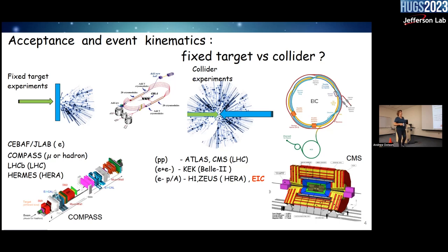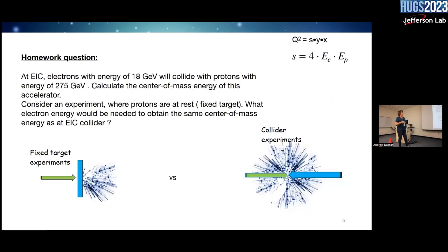For homework: at the EIC we have electrons at 18 GeV and protons at 275 GeV — calculate the center-of-mass energy. Consider that if we wanted this as a fixed-target experiment with protons at rest, what electron energy would we need at Jefferson Lab to compete with the collider? The spoiler: we need to jump from GeV energy to TeV energy. You can calculate and prove it.